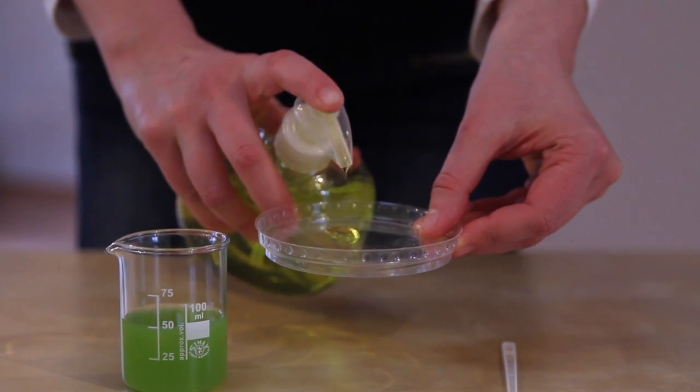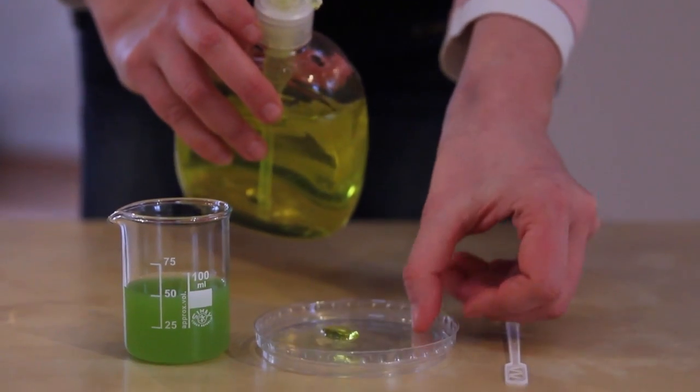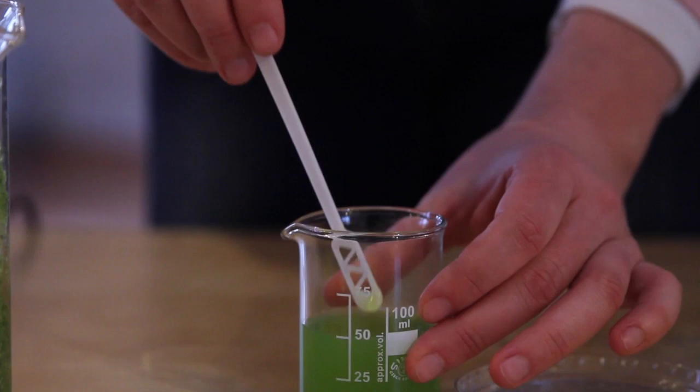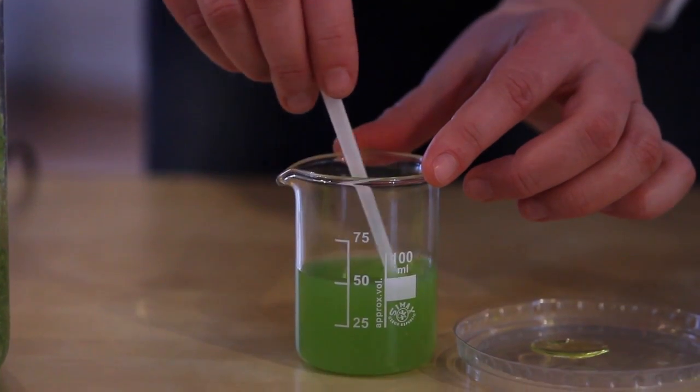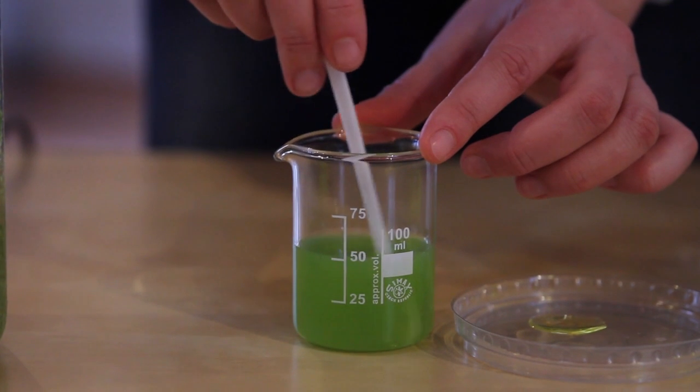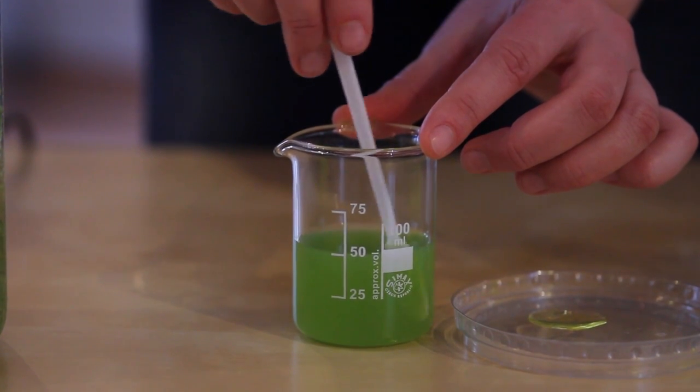Next, pour a little washing up liquid into a separate vessel and then dip a coffee stirrer into it so that the tip is immersed in it. Put the stirrer with the washing up liquid into our solution and mix very slowly so that the solution doesn't foam.